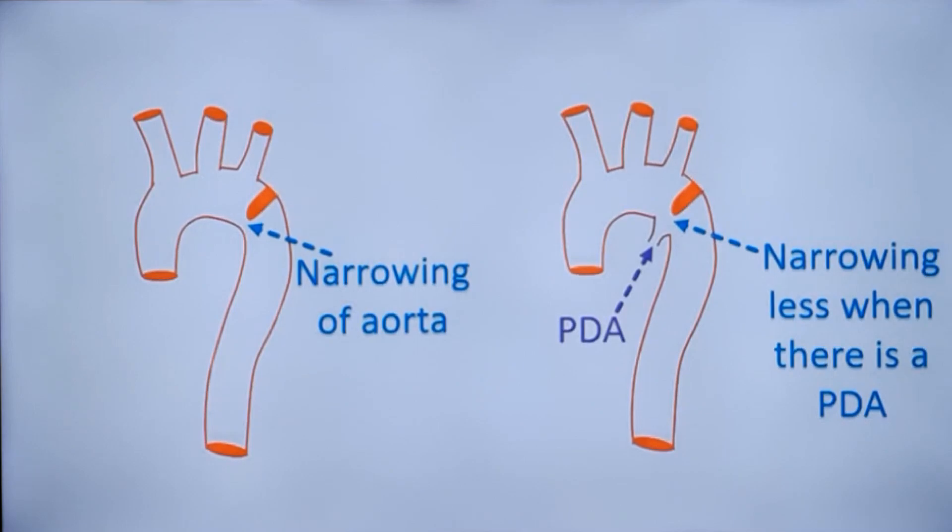Now we will see how a diagnosis of coarctation of aorta can be missed when there is an associated large patent ductus arteriosus.